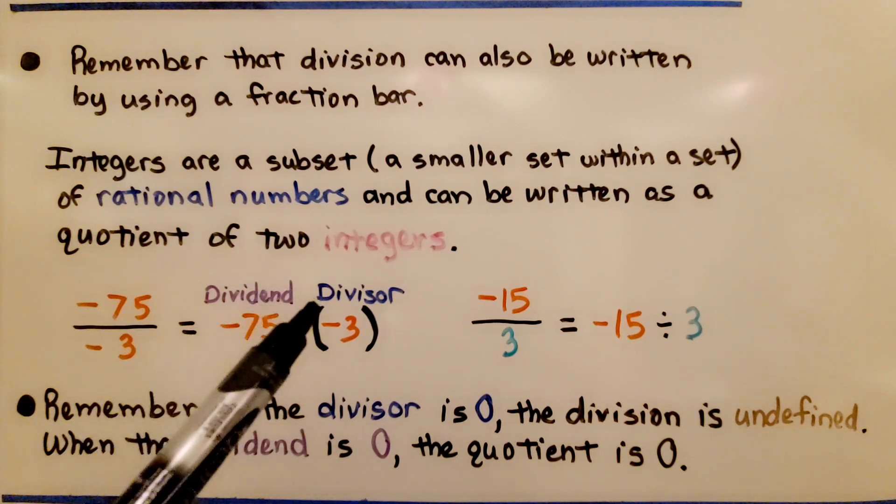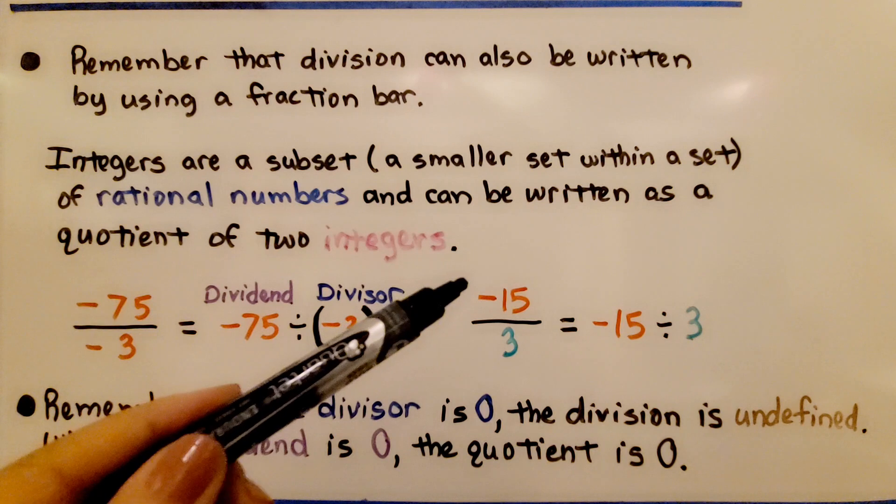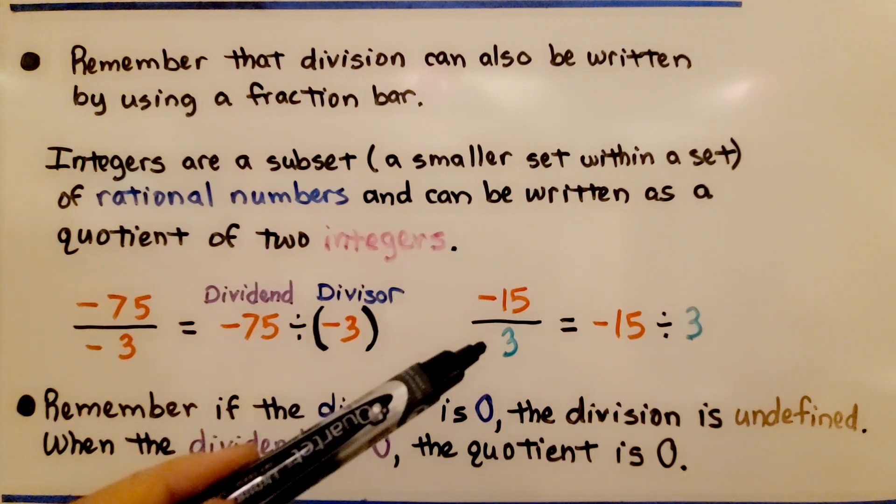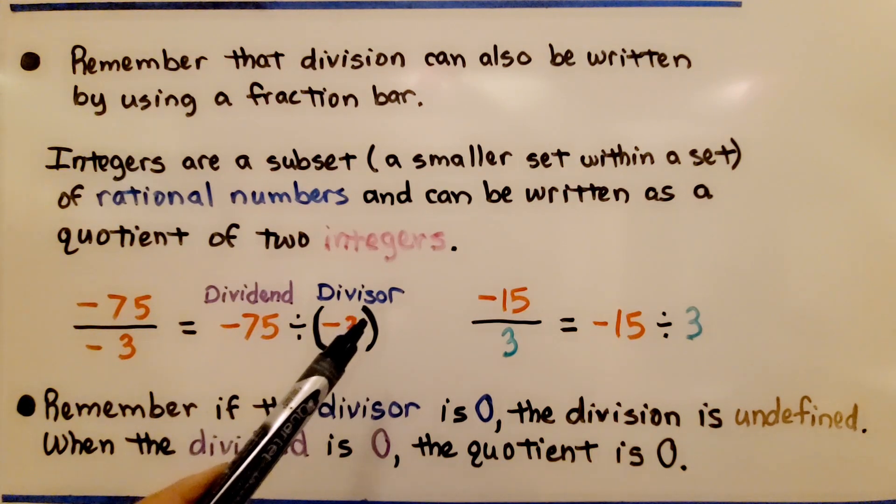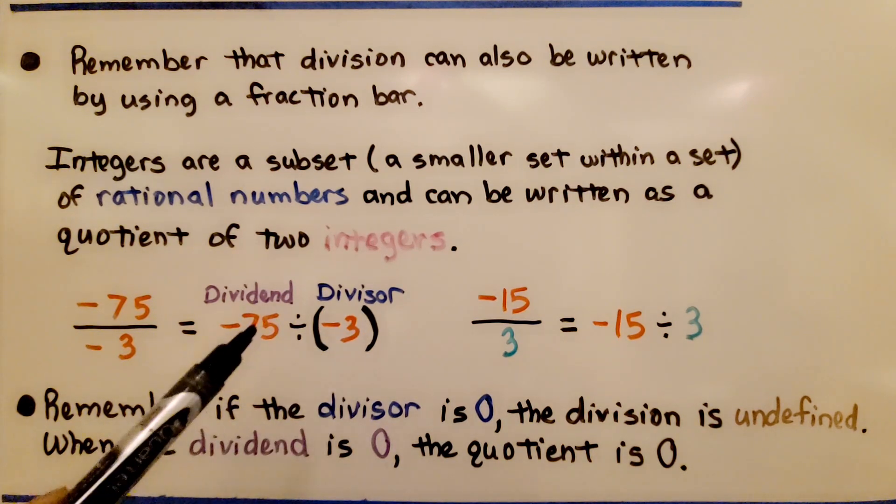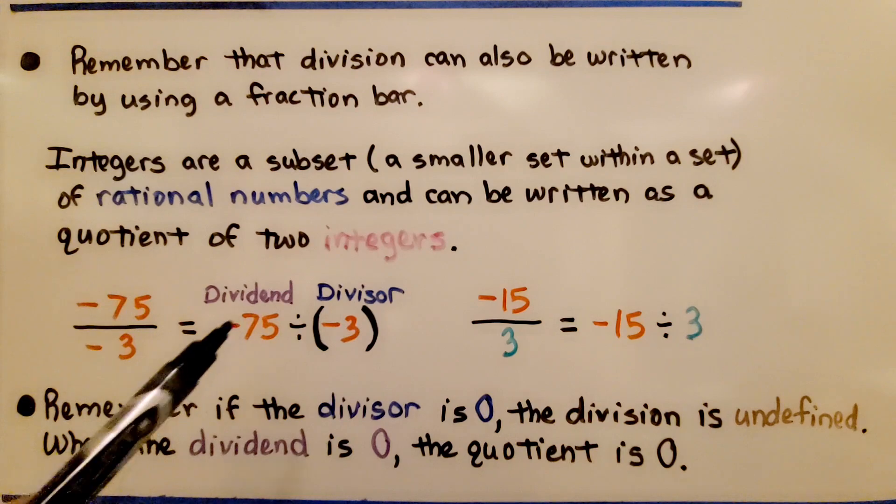This is the dividend. This is the divisor. This is the dividend. This is the divisor. And remember, if the divisor is 0, the division is undefined. If the dividend is 0, the quotient is 0.